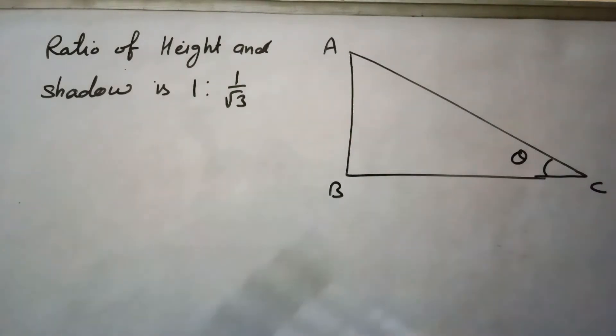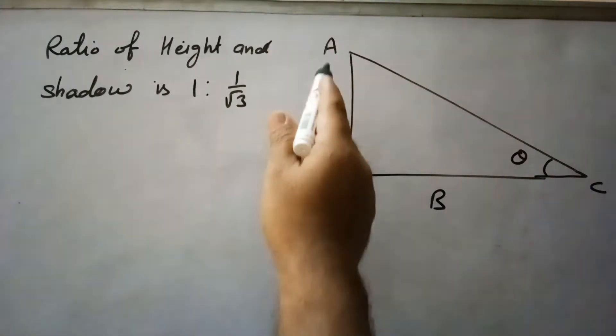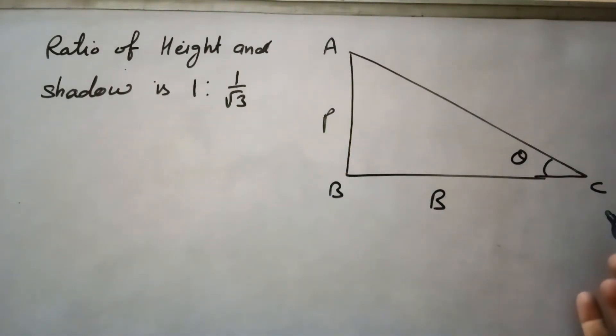Here in this triangle, we have given a ratio of perpendicular and base. Height is perpendicular and BC is base for this right angle triangle. So, ratio of perpendicular to base is given and we need to find this angle theta.